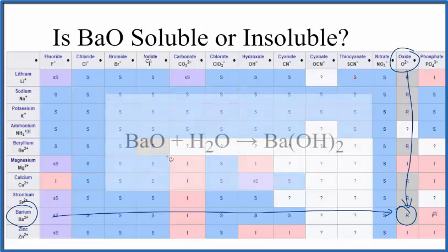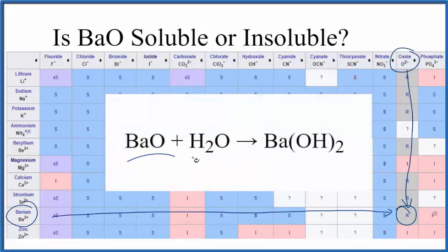That looks like this. So we put solid barium oxide in liquid water. We'd end up with barium hydroxide. If these amounts were exact, we'd end up with solid barium hydroxide.